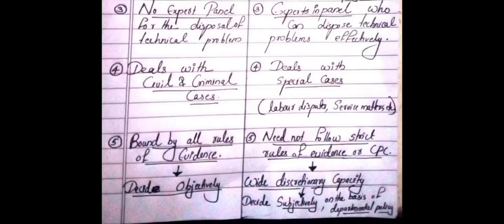Number 3: in a Court of Law, there is no expert panel for the disposal of technical problems. But in Administrative Tribunals, there are experts in the panel who can dispose of technical problems effectively. Number 4: a Court of Law deals with civil and criminal cases, whereas Administrative Tribunals deal with special cases — for example, labor disputes, service matters, etc.